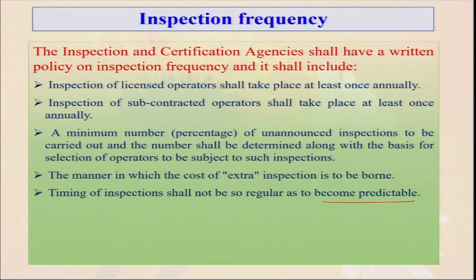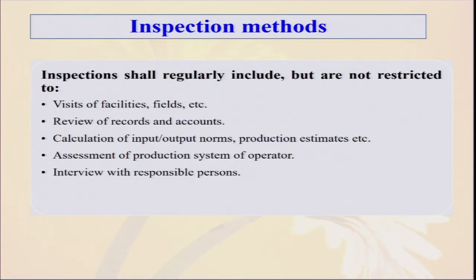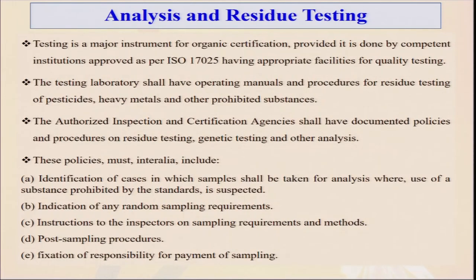The inspection and certification agency shall have a written policy on inspection frequency. Inspection of license operators shall take place at least annually — at minimum once per year — but can be two or three times. The minimum number of unannounced inspections must be carried out: surprise visits may occur at your farm to check whether everything is being done in accordance with organic standard practices. The timing of inspection shall not be so regular that it becomes predictable — it can be different months and different times of day.